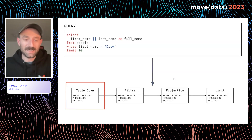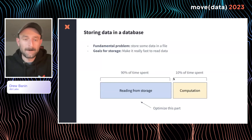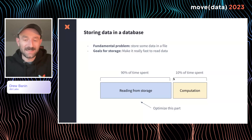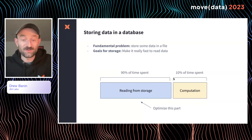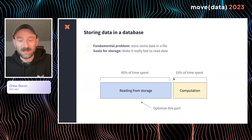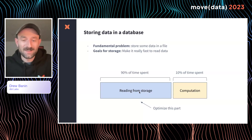Let's focus on the table scan operator. The fundamental problem we want to solve is that we want to store some data in a file that our database can read and write, and our goal is to make it really fast. In a database, a lot of the time spent is actually reading data from storage, especially when you have really big data sets. Usually a much smaller proportion of the time is spent on computing something, like concatenating your first name and last name. So let's think about how to optimize reading from storage.